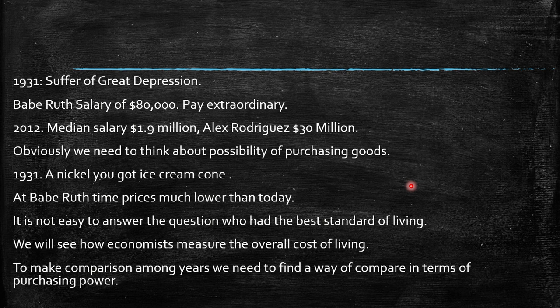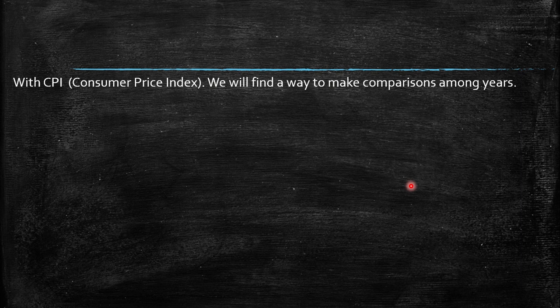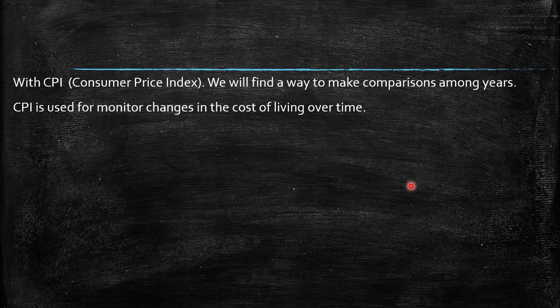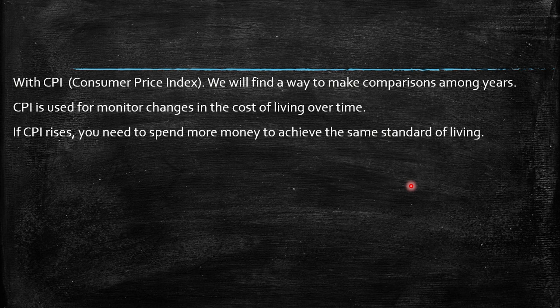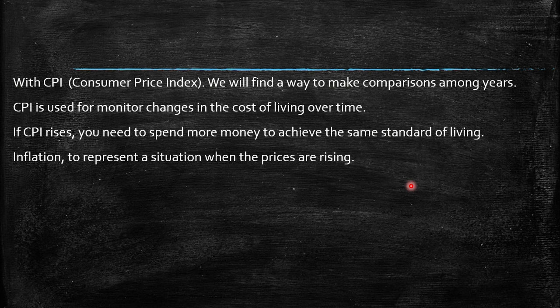During this chapter, we'll learn how economists measure the overall cost of living and compare dollar values at different points in time. We focus on purchasing power. The key concept is the Consumer Price Index, or CPI, which allows us to make comparisons among years. The CPI monitors changes in the cost of living over time. If the CPI rises, you need to spend more money to achieve the same standard of living.